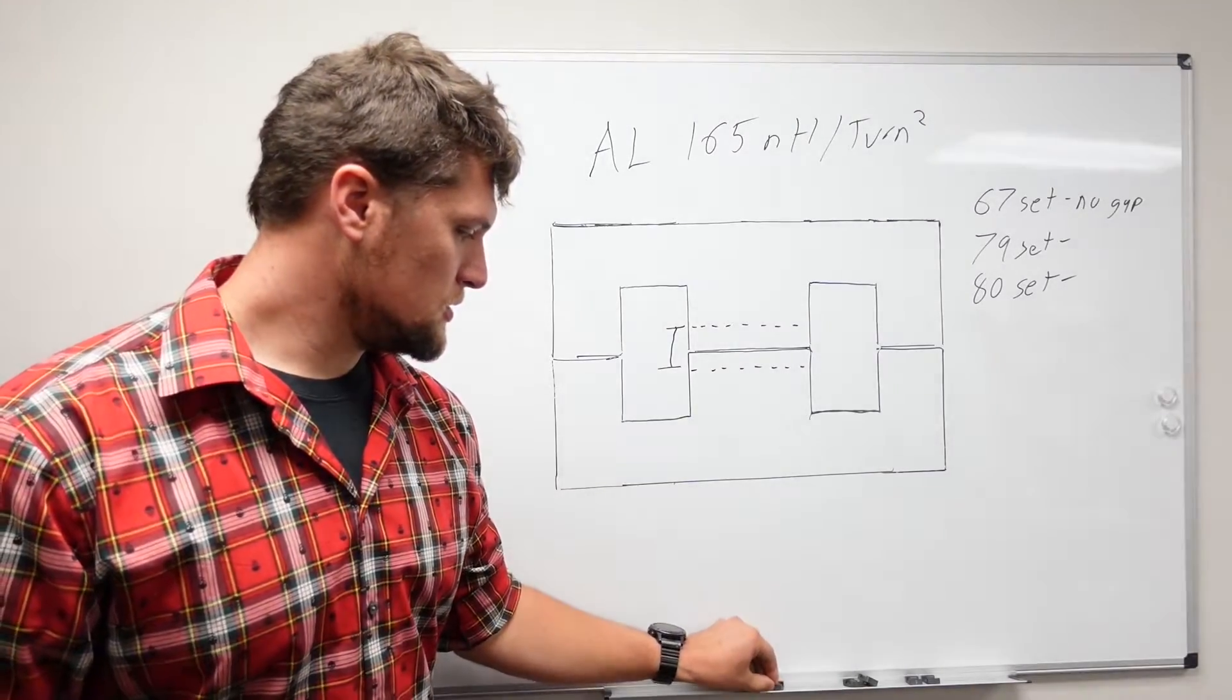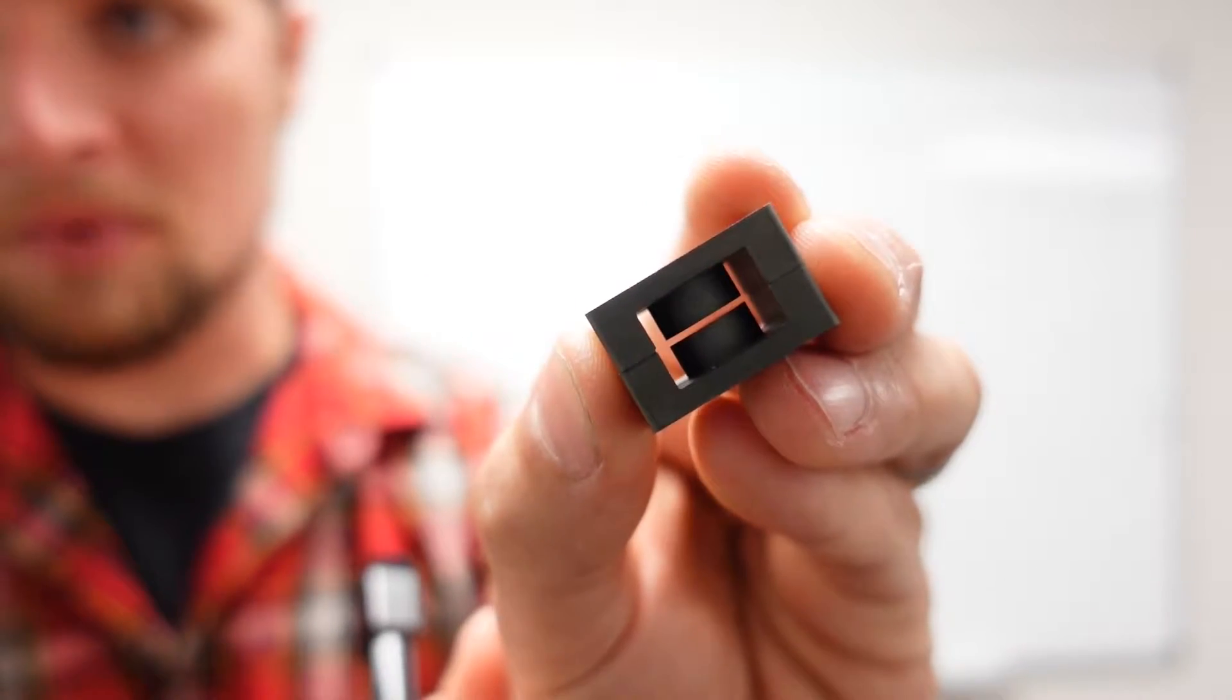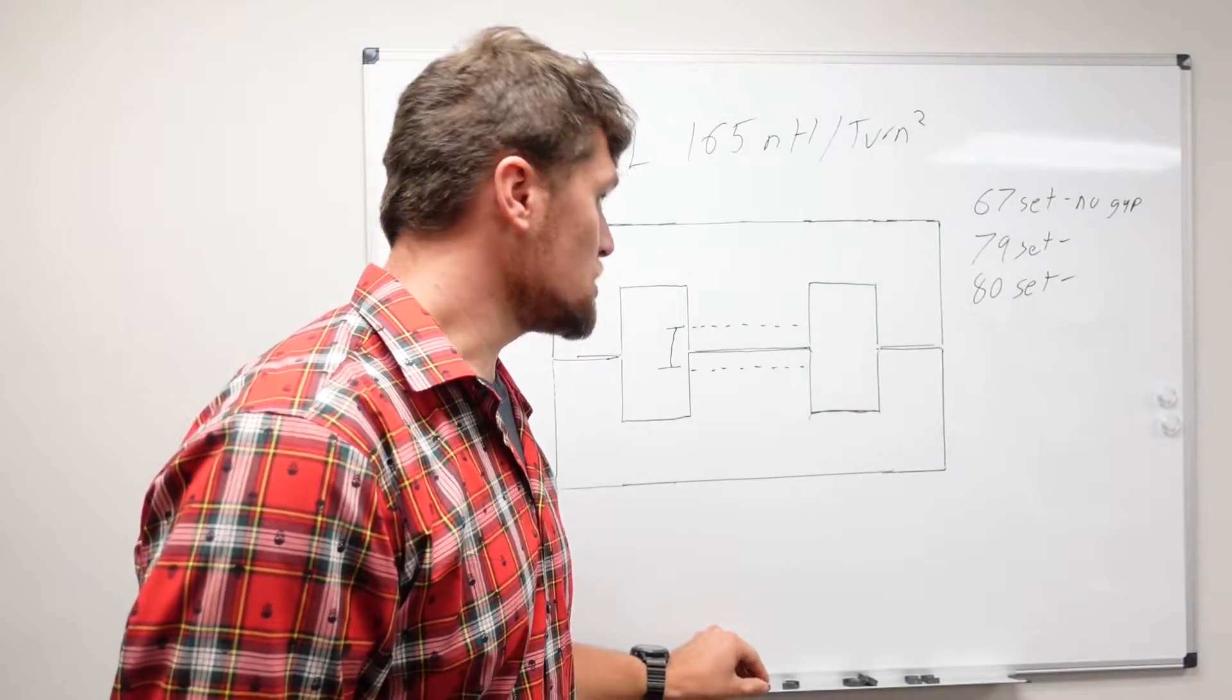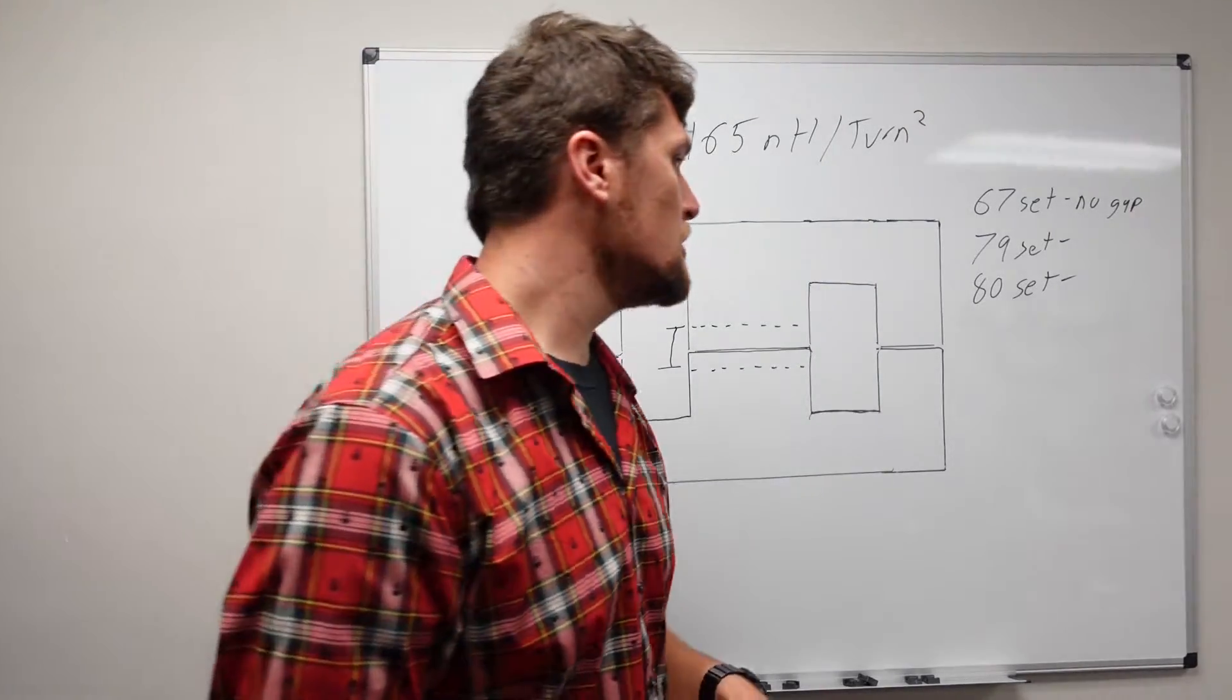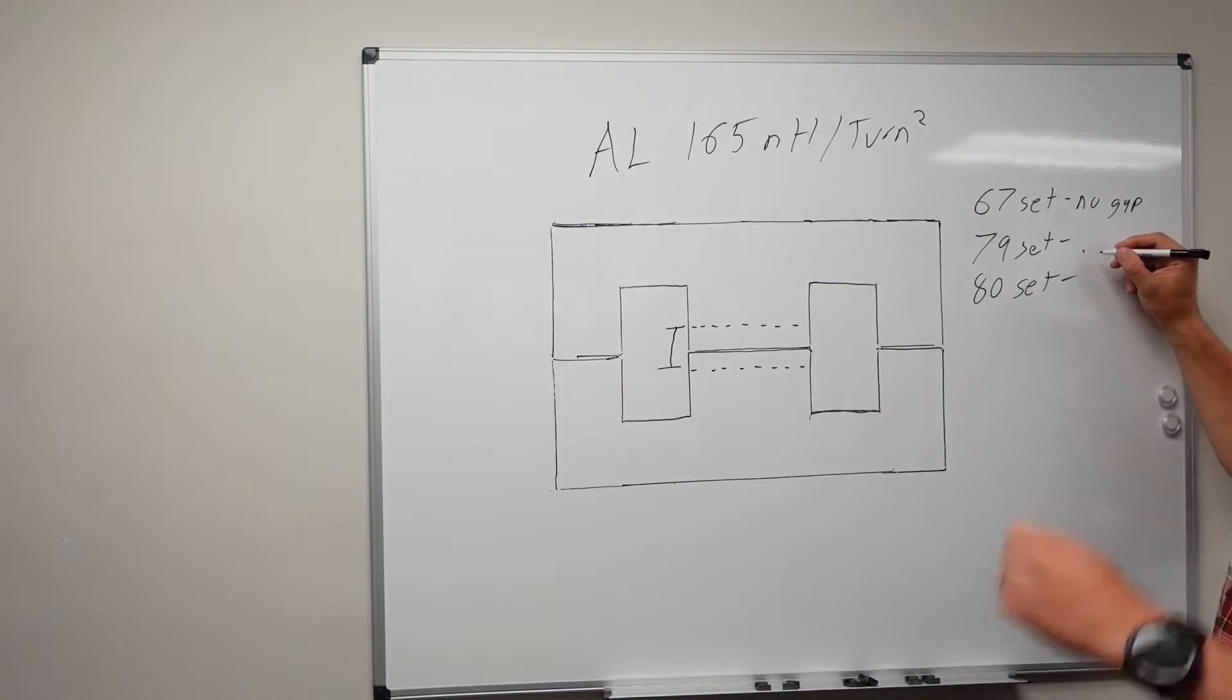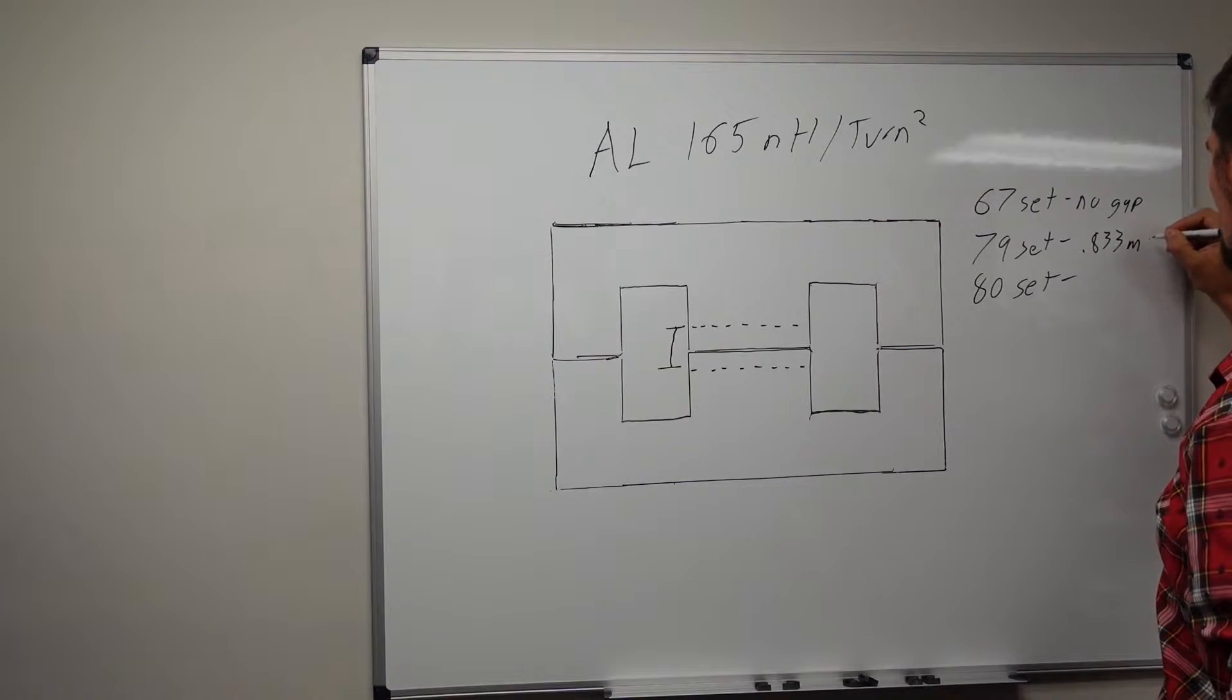And here's our set of 79 material cores. You can see the gap cut out of the center post. So in order to achieve 165 nanohenry per turn, we wound up with, on our 79 set, a gap length of 0.833 millimeters.